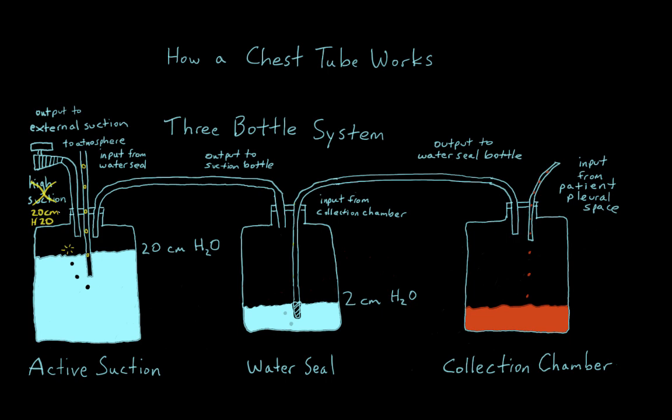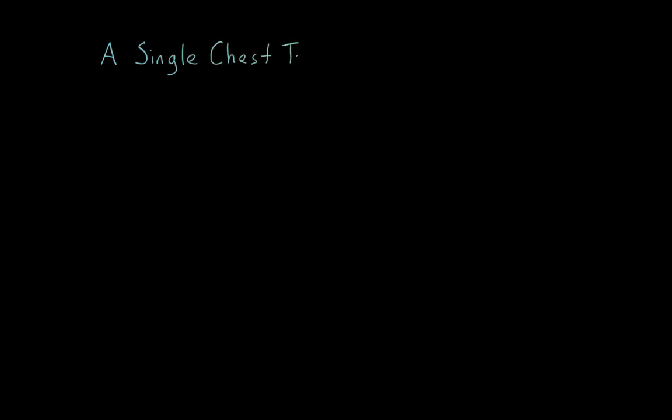Take the time to learn the three-bottle system. Knowing the difference between water seal and suction will go a long way towards your understanding of chest tube management. If you haven't seen a three-bottle system in the hospital, it's because we don't use them anymore. Every new bottle requires connecting new tubes, and every tube connection creates an additional opportunity for air from the outside to enter the closed system and disrupt the function of the chest tube.